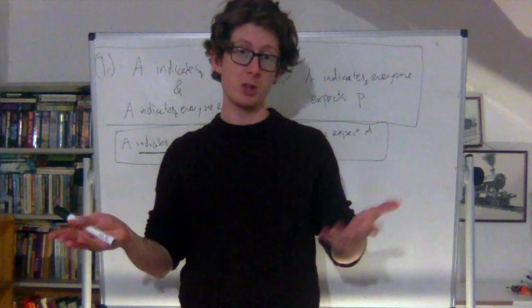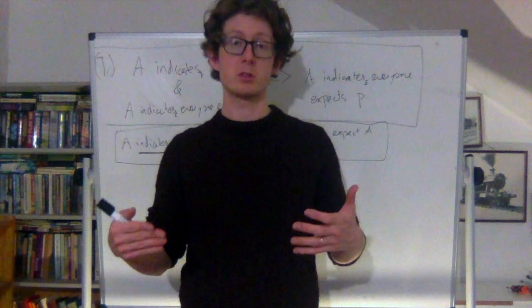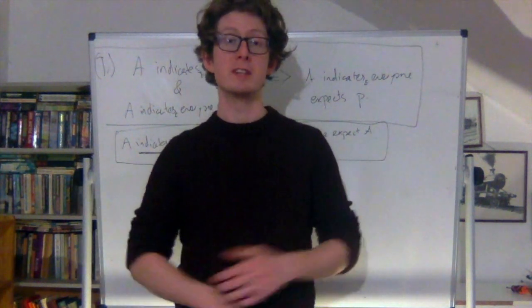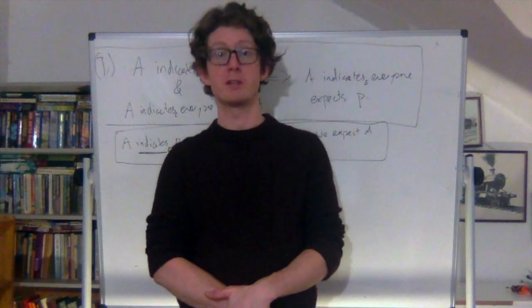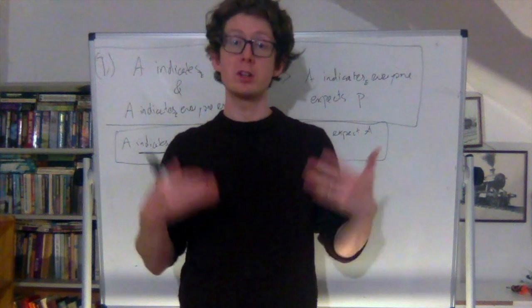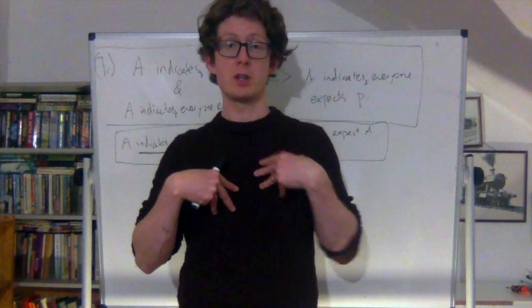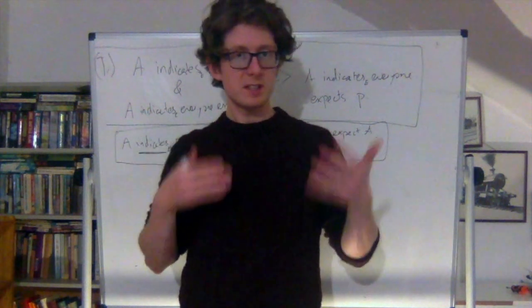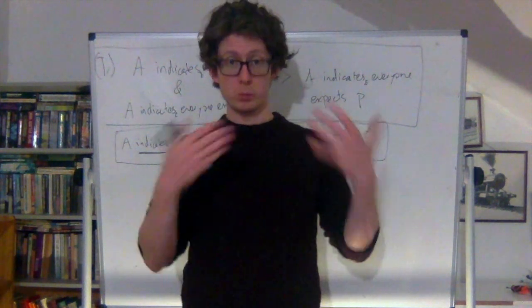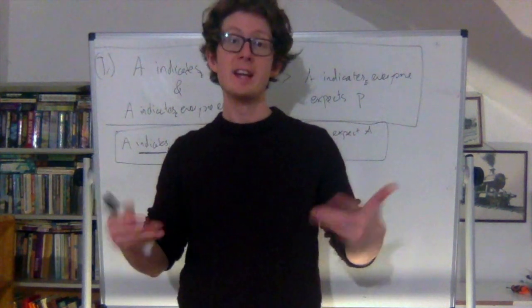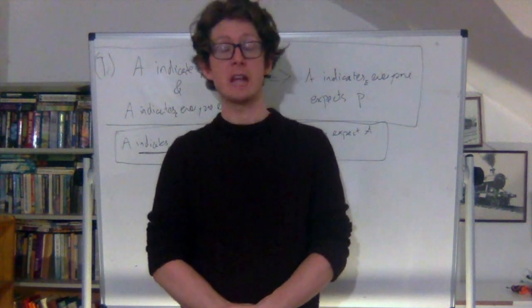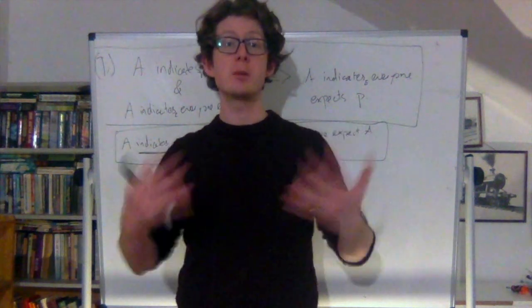Thinking about the situation I've just described, here are a few things that seem plausible. First, it seems plausible that both of us have reason to expect that A holds - A is just a description of our situation. We're normal perceivers involved in this situation, and it looks like we both have good reason to think that A is the case. It also seems that the situation A indicates this proposition M about us meeting tomorrow. If you learned that was the situation, you would come to expect that we were going to meet tomorrow - that's just what indication says. Lastly, it looks like A indicates that everybody expects A to be the case, i.e., that everybody has good reason to think that A is the case.